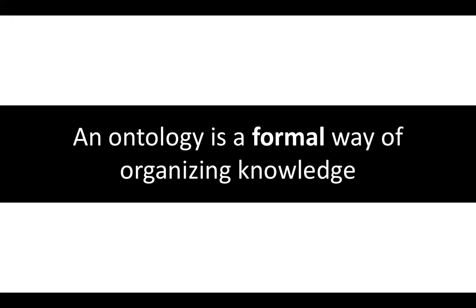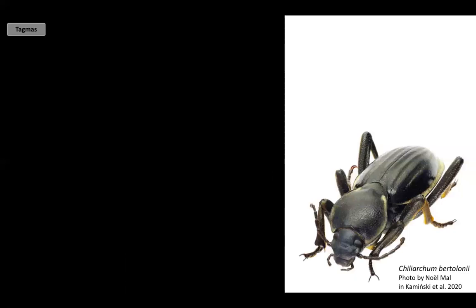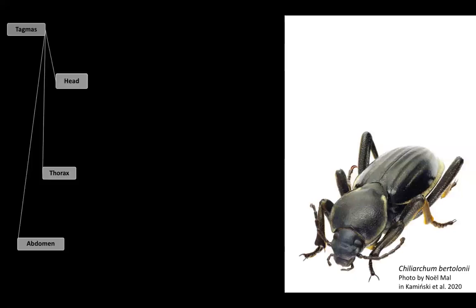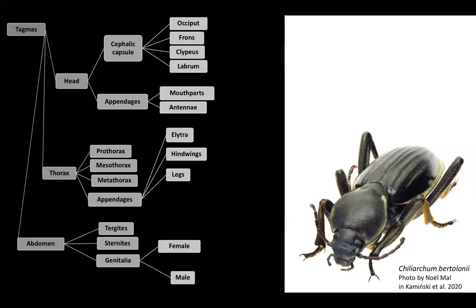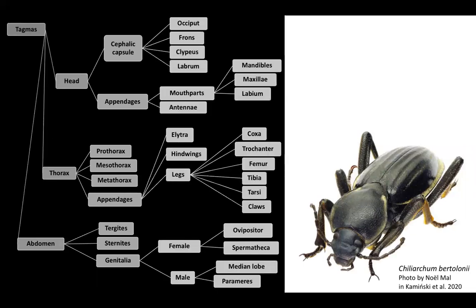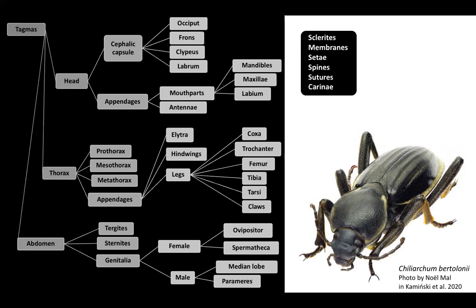For example, when we think of the anatomy of a beetle, one of the ways to organize what we know about it is to think of the main divisions of the body, or tagmas. Each of those tagmas is subdivided into different sections, which can be subdivided further and further. We also need to consider the presence of sclerites, membranes, and CT, for example, and keep in mind the relative position of each structure. As you can imagine, we would struggle to get all these terms, their relationships, and the overlapping hierarchies involved in a simple database. That is why we are using an ontological approach to represent our knowledge of beetle anatomy.